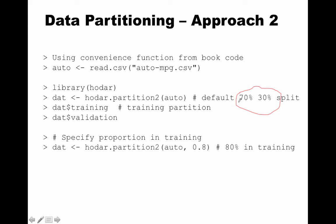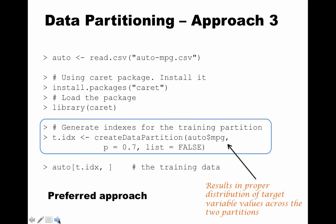If you want a non-default partition — by default it creates 70-30 if you just pass the data frame — you can pass the desired number of rows as a second argument. Note: there is a mistake in the slide; it should say nrow times 0.8, because you're supposed to specify the number of rows, not just the proportion. But other than that, if you do this correctly, you will get a training partition with 80% and a validation partition with 20% of the rows.